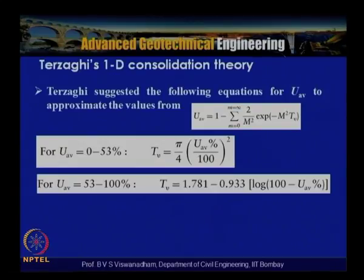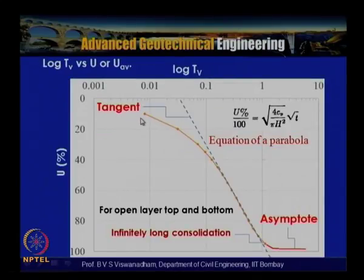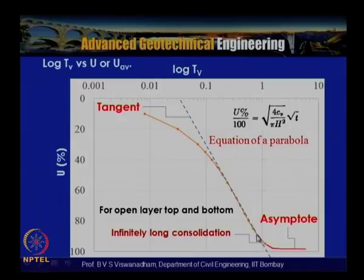Plotting Tv (on a log scale) versus Uav gives a characteristic S-shaped curve. The initial portion of the curve resembles a parabola — corresponding to Tv = (π/4)(Uav/100)² — and beyond 90–95% the curve becomes asymptotic to the horizontal (Uav = 100%), indicating consolidation never fully completes.